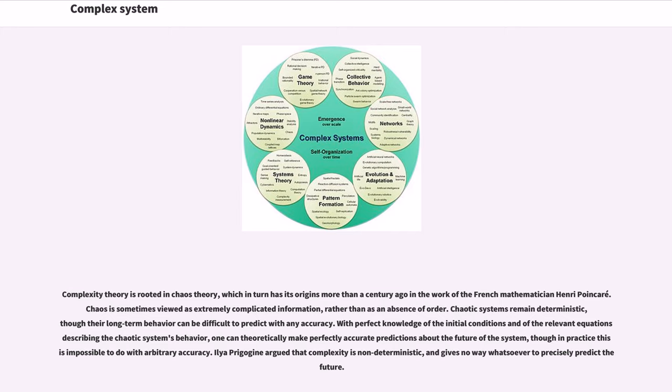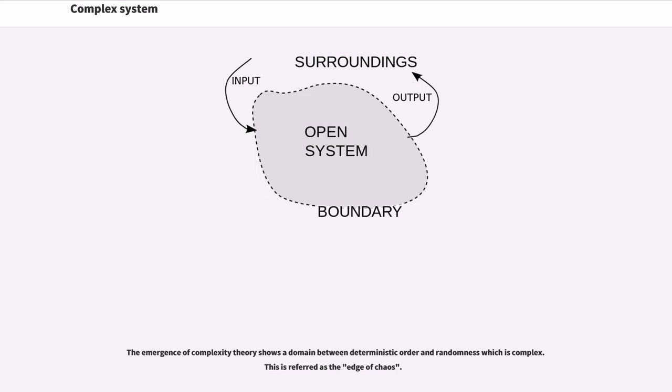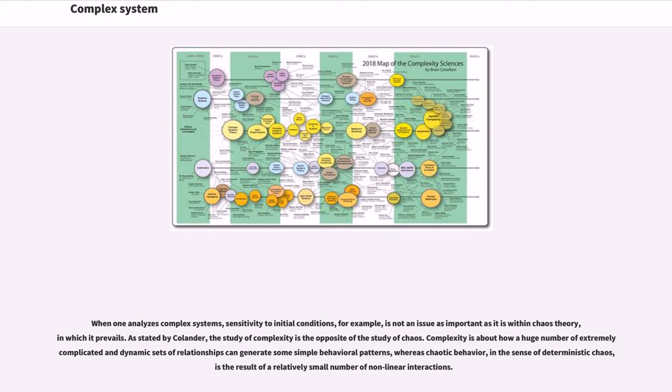Ilya Prigogine argued that complexity is non-deterministic, and gives no way whatsoever to precisely predict the future. The emergence of complexity theory shows a domain between deterministic order and randomness which is complex. This is referred as the edge of chaos. When one analyzes complex systems, sensitivity to initial conditions, for example, is not an issue as important as it is within chaos theory, in which it prevails.